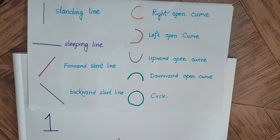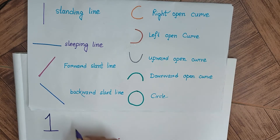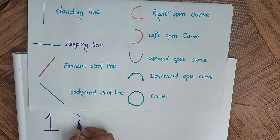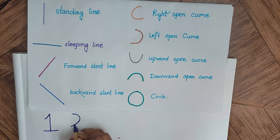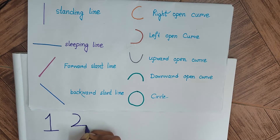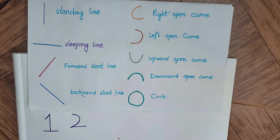Now we will write number 2. For 2, please see how we are doing it. First we have used a left open curve like this, and then a slipping line at the bottom to form the number 2. Now we will go to number 3.